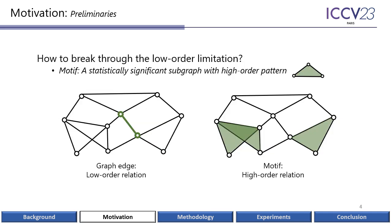In order to solve this dilemma, in this work, we introduce the concept of a motif, which represents a subgraph with high-order patterns. In a graph, the edge models the pairwise relation between two nodes, while the motif can model more complex and high-order relationships among multiple entities. We will use this nature to model the high-order relation among class centers and extremes to address the low-order limitation.